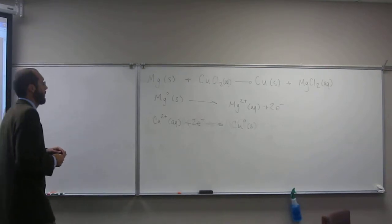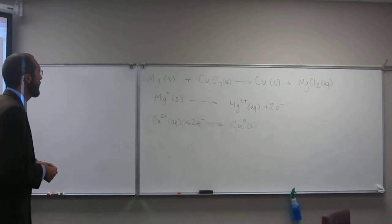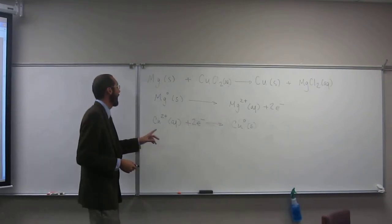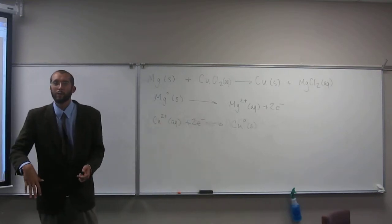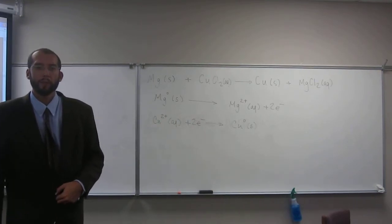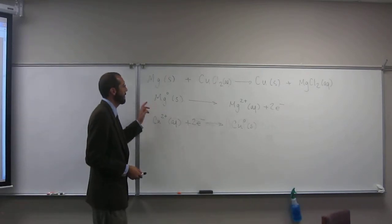So do you guys remember Leo the lion says grr, and all of that stuff? The easy way, an easy thing to remember, I always think, is when I look at these numbers, the one that gets smaller is the one that's reduced. So which one of these is reduced?